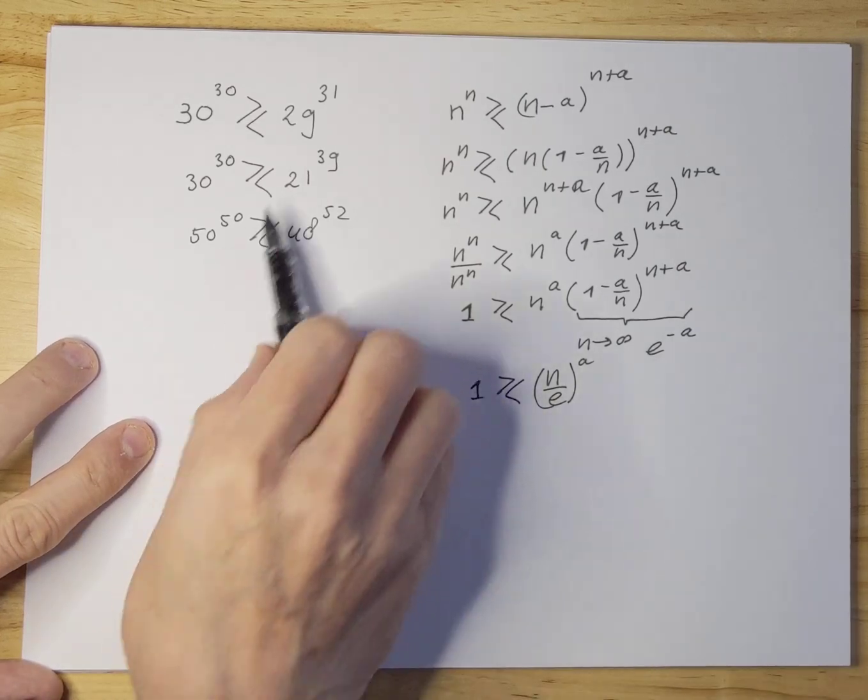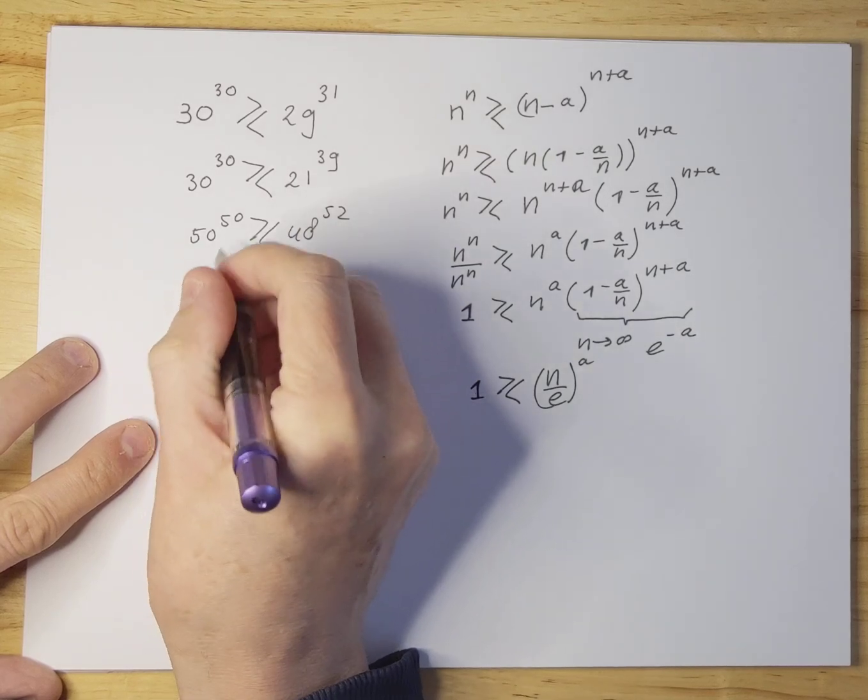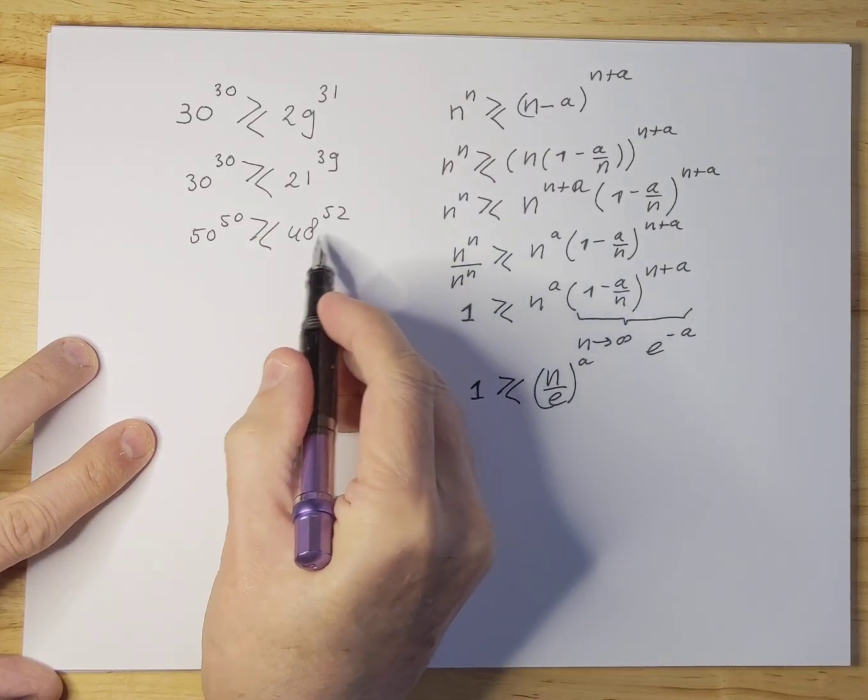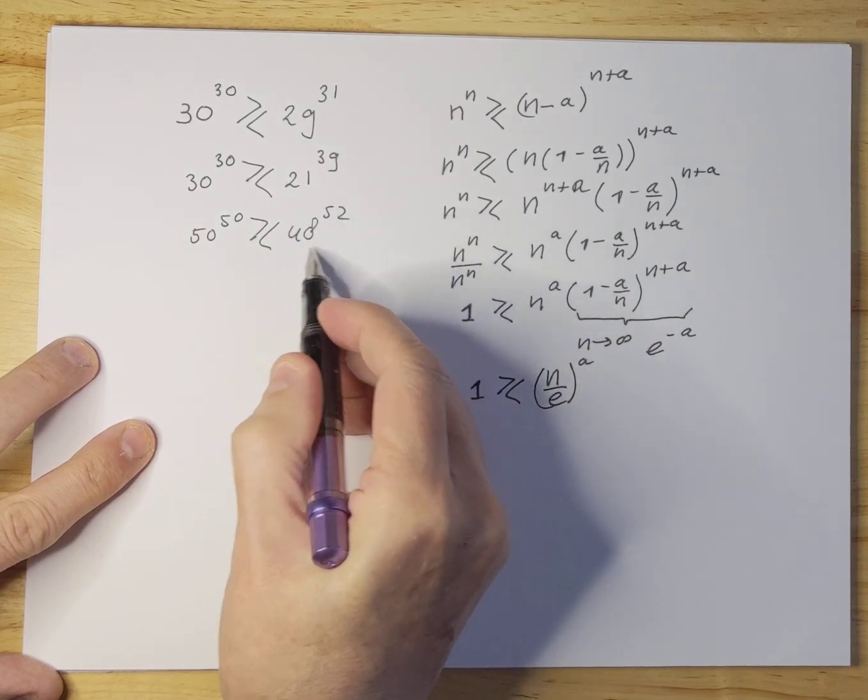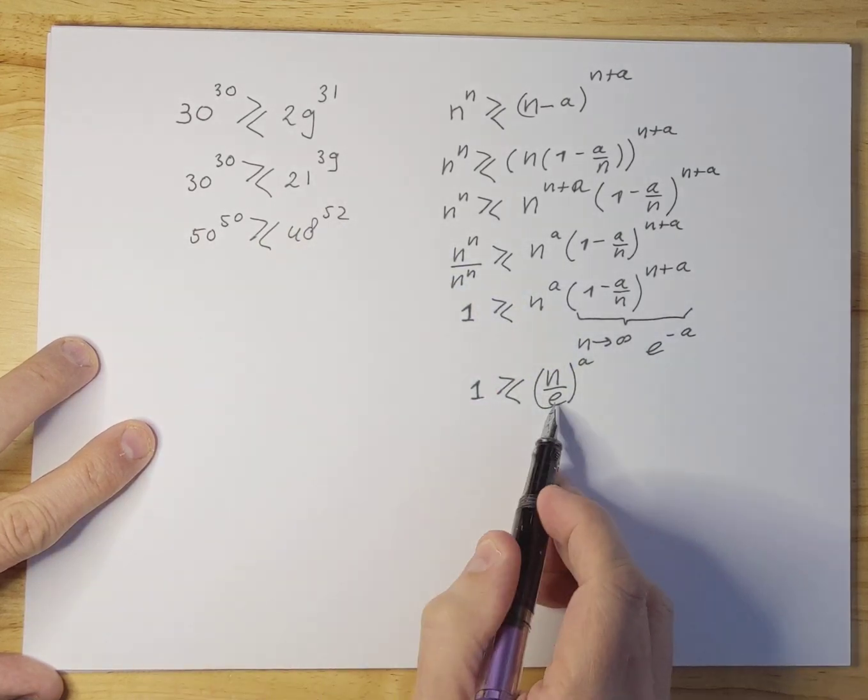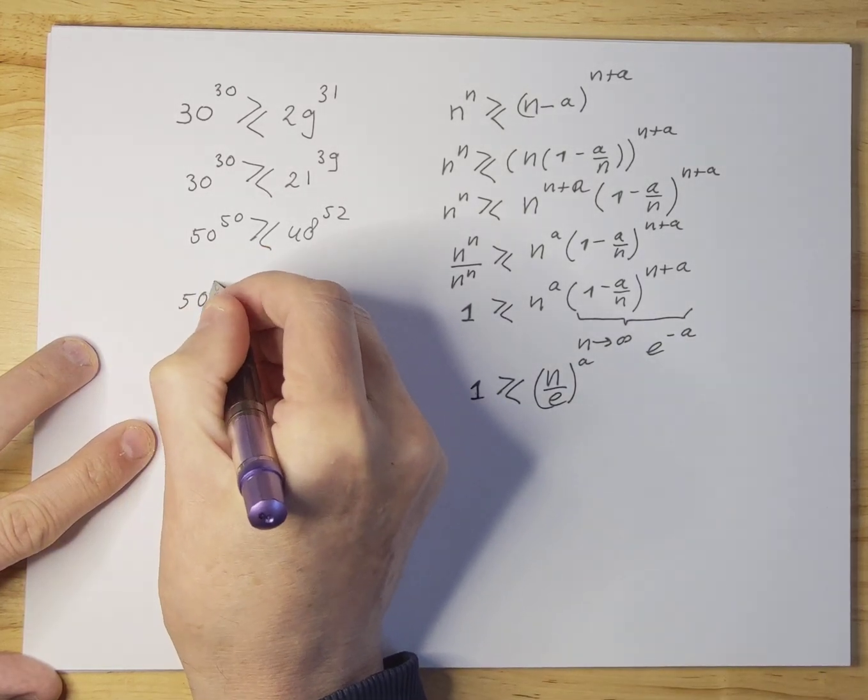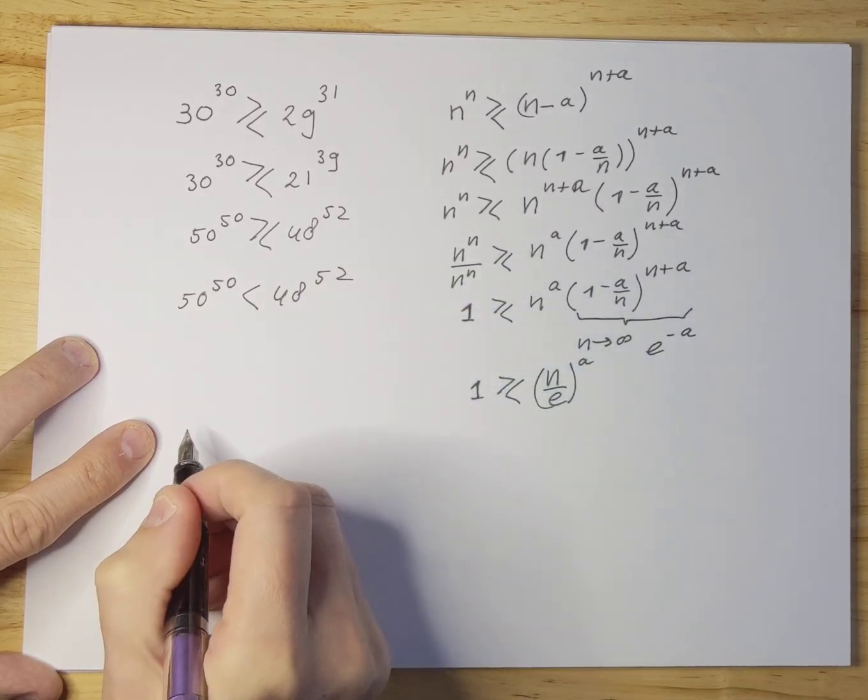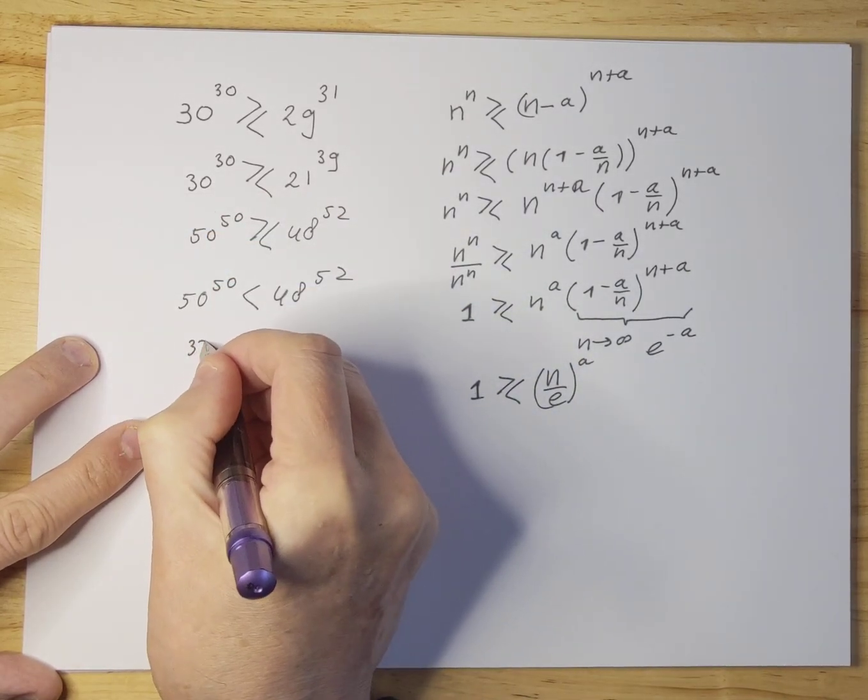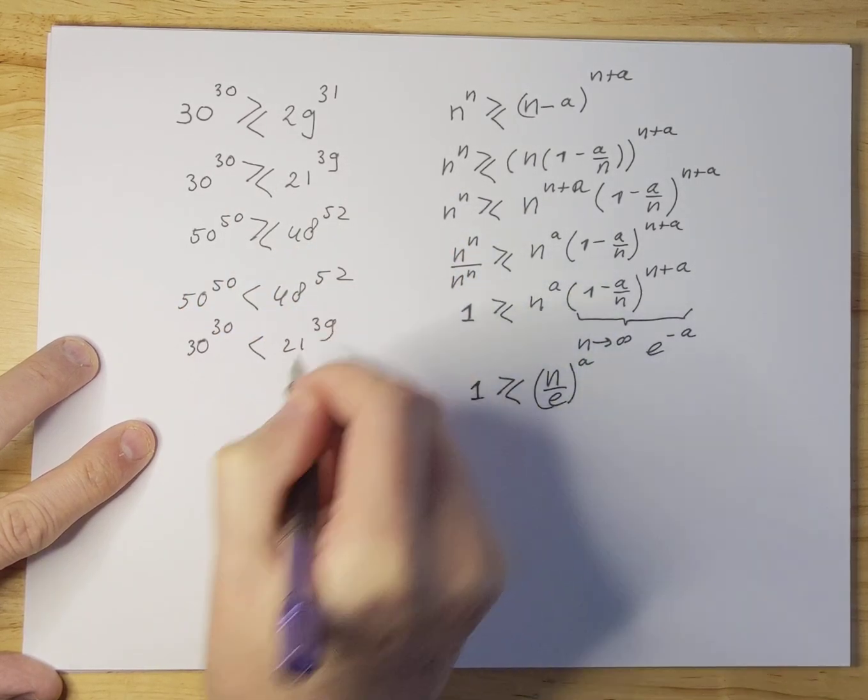So going back to examples over here you can immediately see that things like 50 to the 50 divided by, or is that bigger or smaller than 48 to the 52. Well this number is clearly bigger because of this reasoning, right. So now we can say 50 to the 50 is really smaller than 48 to the 52 and 30 to the 30 is really smaller than 29 to the 31 even.